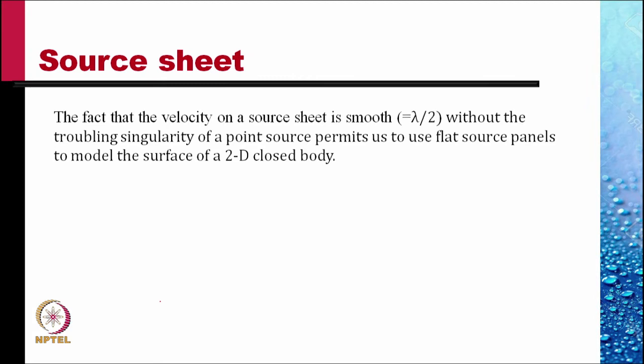The fact that the velocity of the source sheet is smooth, equal to lambda by 2, without the troubling singularity of a point source permits us to use flat plate source panels to model the surface of a 2D closed body.